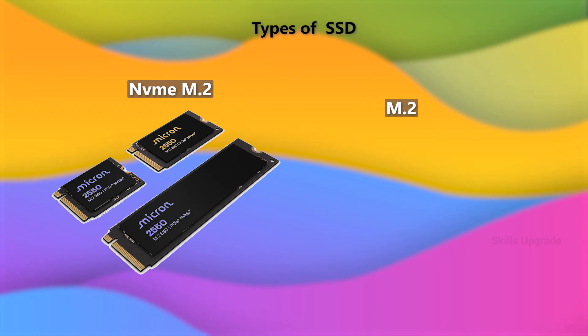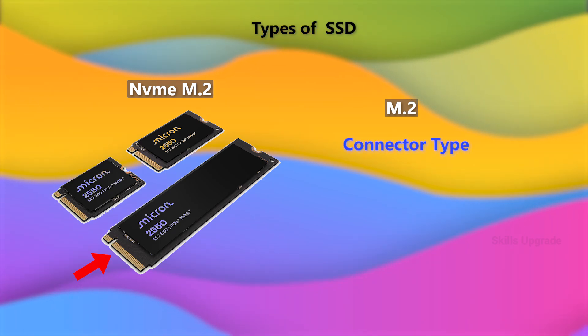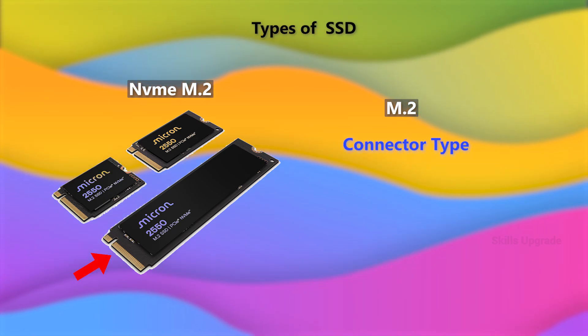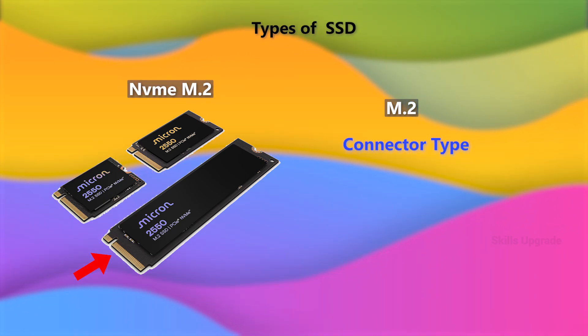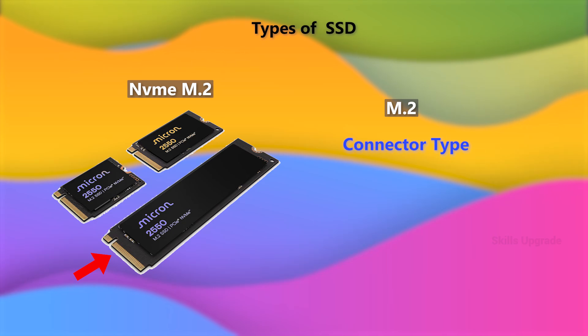If NVMe is connected to the interface type, the type is called M.2.